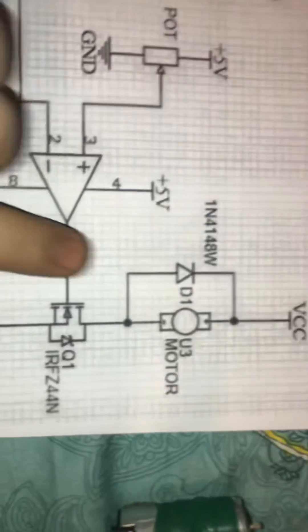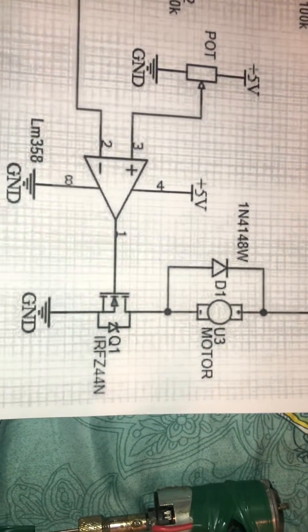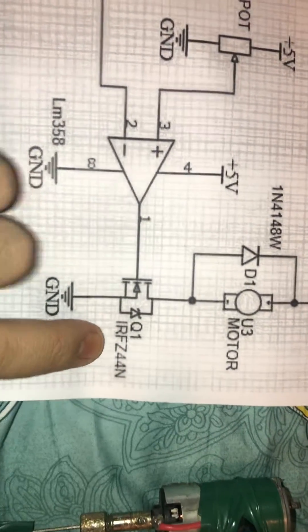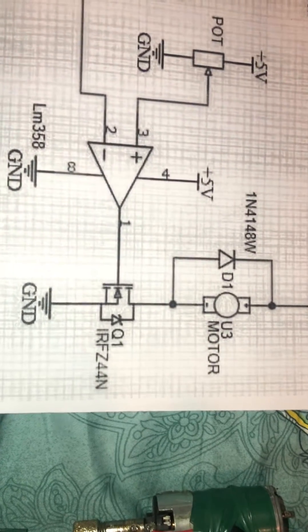The protector diode is necessary to run the project. If you don't have the IRFZ44, go for any NPN high voltage transistor.